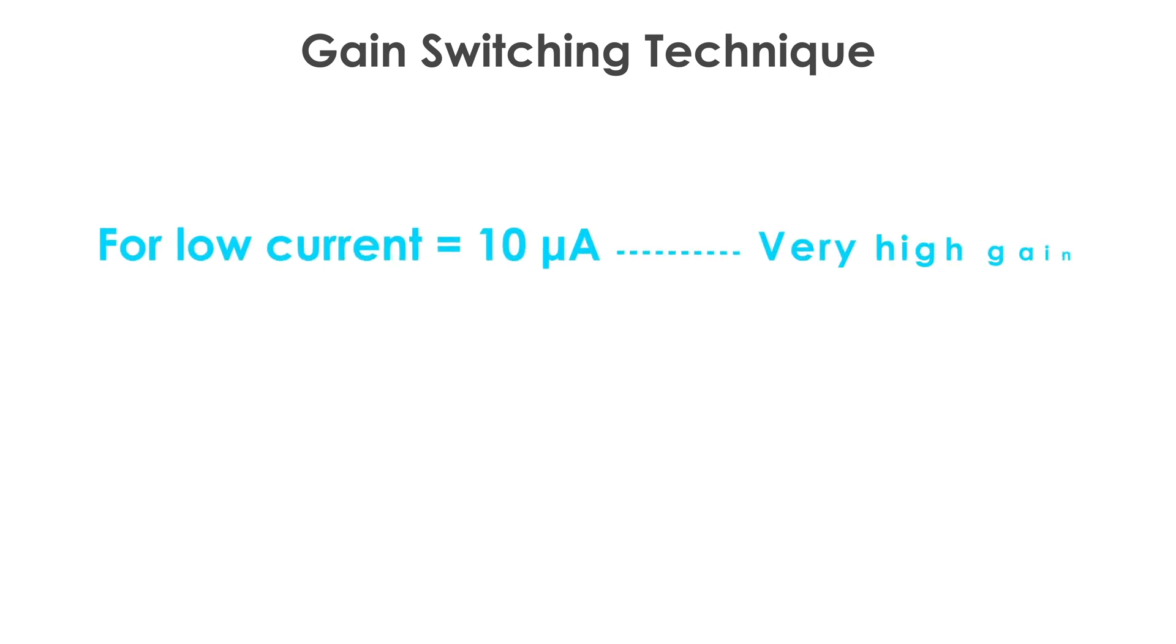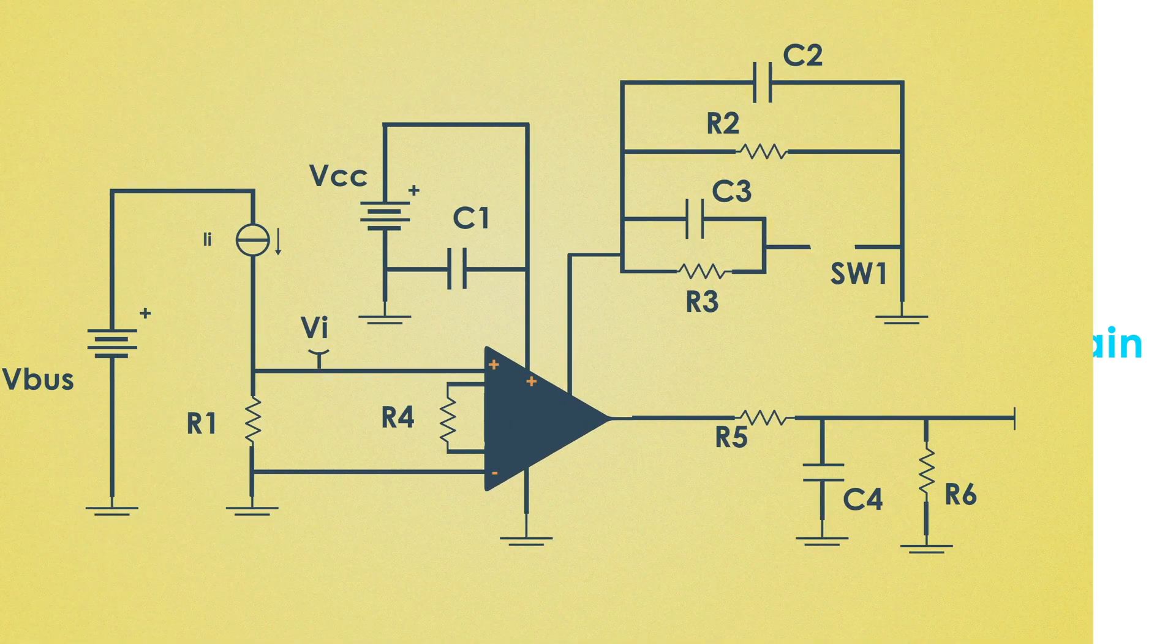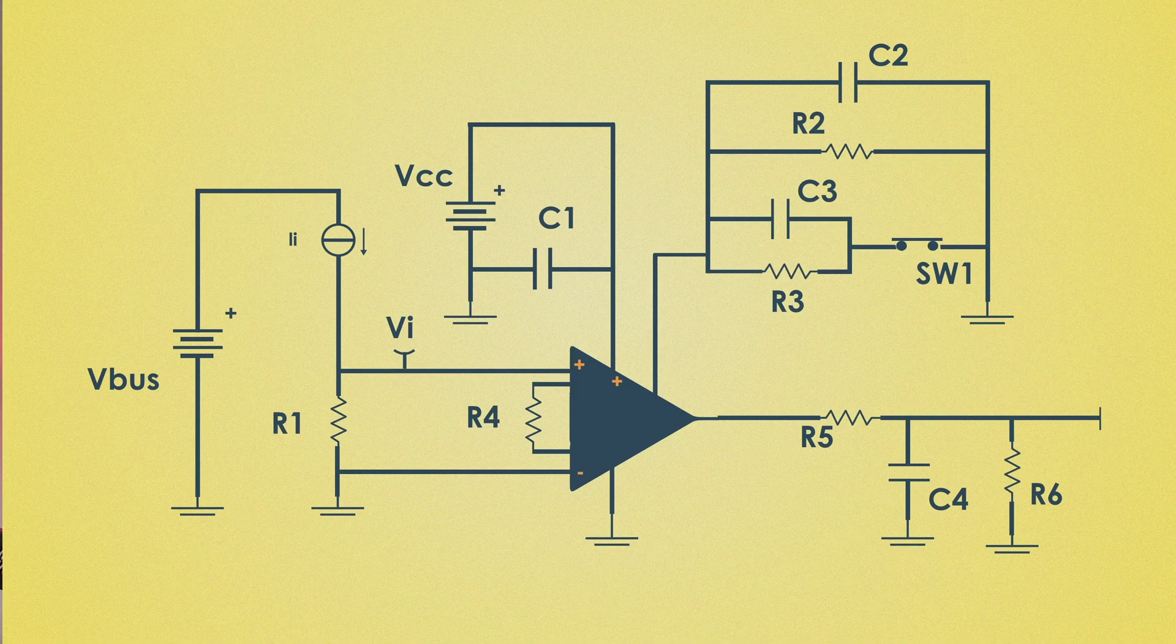The circuit implements a gain switching technique to handle three different current ranges. For low current, say 10µA, the circuit requires very high gain. For medium currents, it needs a moderate gain. For high currents of 10mA, a low gain is sufficient. The switch SW1 toggles between two paths.